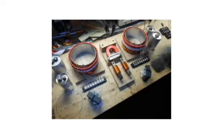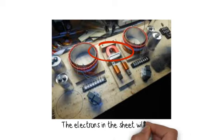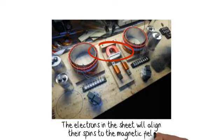Here are the few steps to follow in building one of your own. Place one pole of a permanent magnet against a steel plate. The electrons in that sheet will align their spins to the magnetic field.